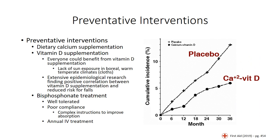To slow age-related losses in bone mineral density, education about dietary vitamin D supplementation should be a routine conversation with older patients. For patients at greater risk of osteoporosis, bisphosphonate medications help prevent bone mineral density loss by promoting osteoclastic apoptosis. The medication is well tolerated with few side effects, but patient compliance is poor due to the complex instructions associated with it. The development of annual intravenous treatments has helped to improve compliance.